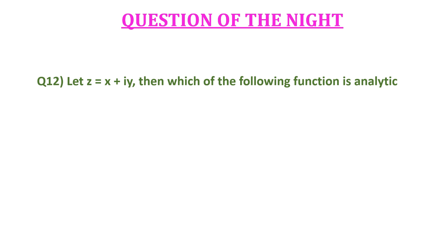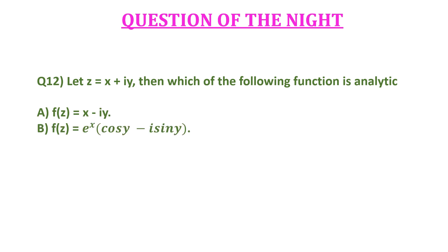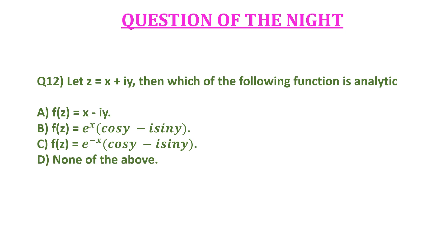The question is: if z equals x plus iy, then which of the following functions is analytic? Option a: f(z) = x minus iy. Option b: f(z) = e^x times (cos y minus i sin y). Option c: f(z) = e^(-x) times (cos y minus i sin y). Option d: none of the above.